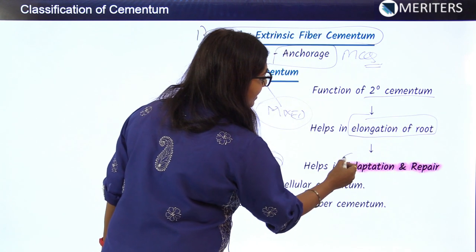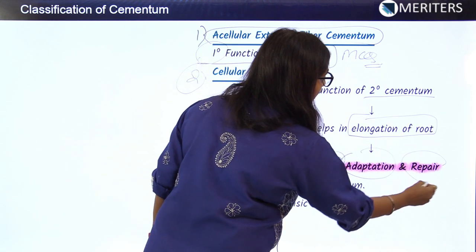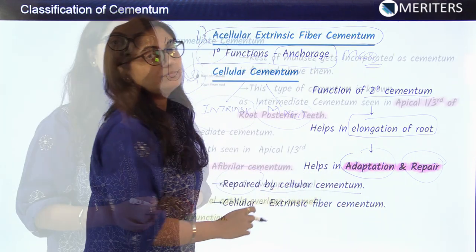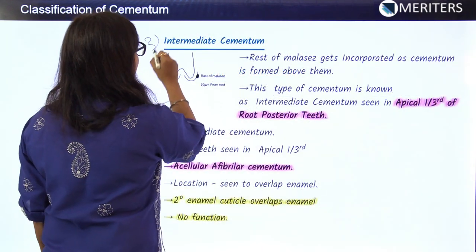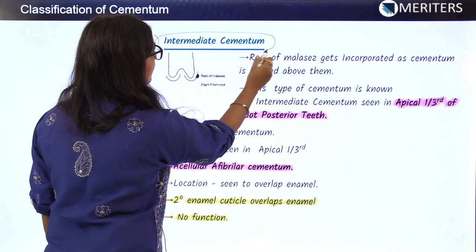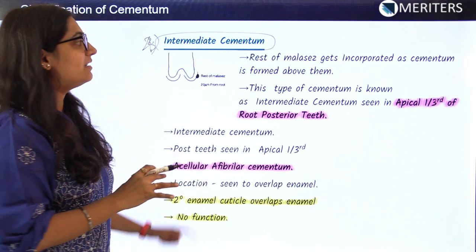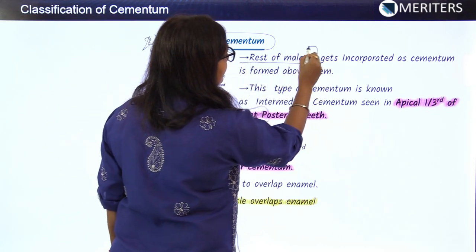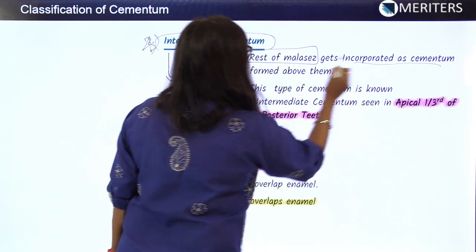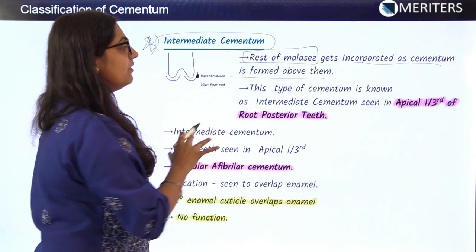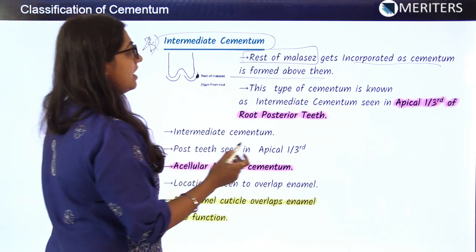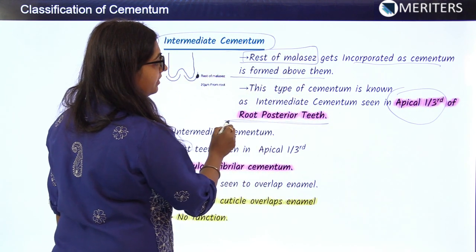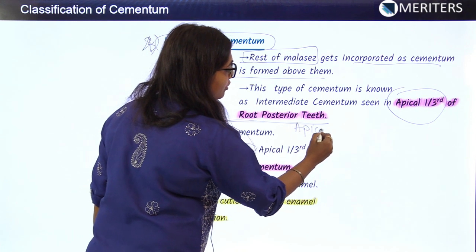The cellular cementum types — also known as secondary cementum — help in elongation of the root. They perform adaptation and repair functions. The fourth type is intermediate cementum; it is found between two layers, consisting of rests of Malassez that get incorporated as cementum forms above them. Intermediate cementum is found in the apical one-third of the root in posterior teeth.